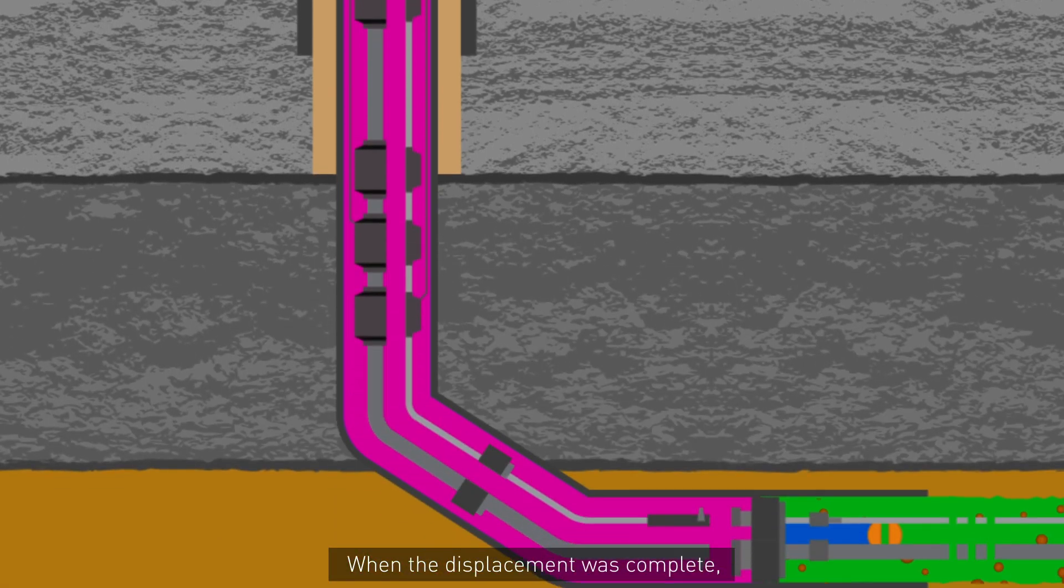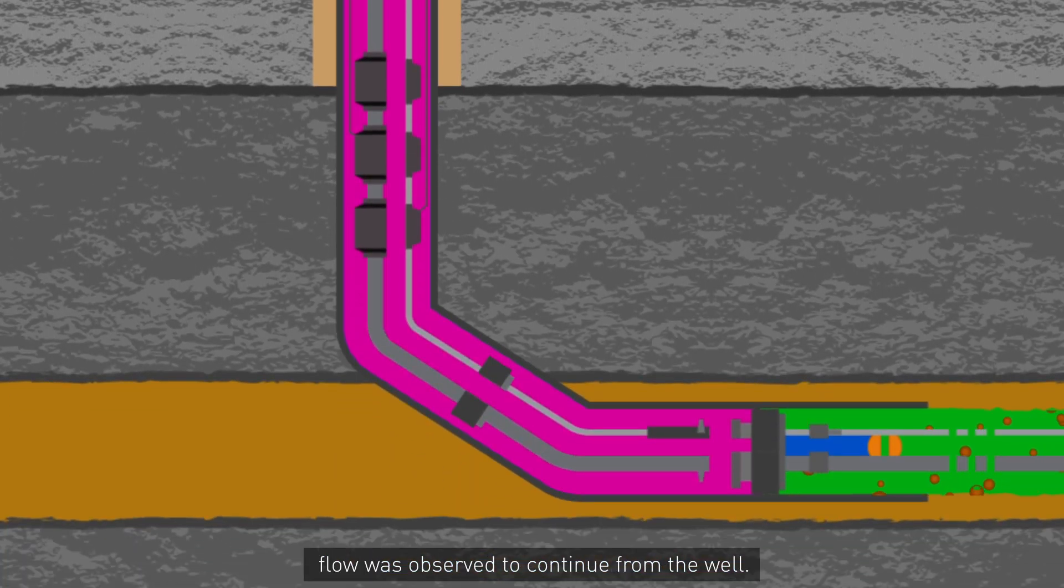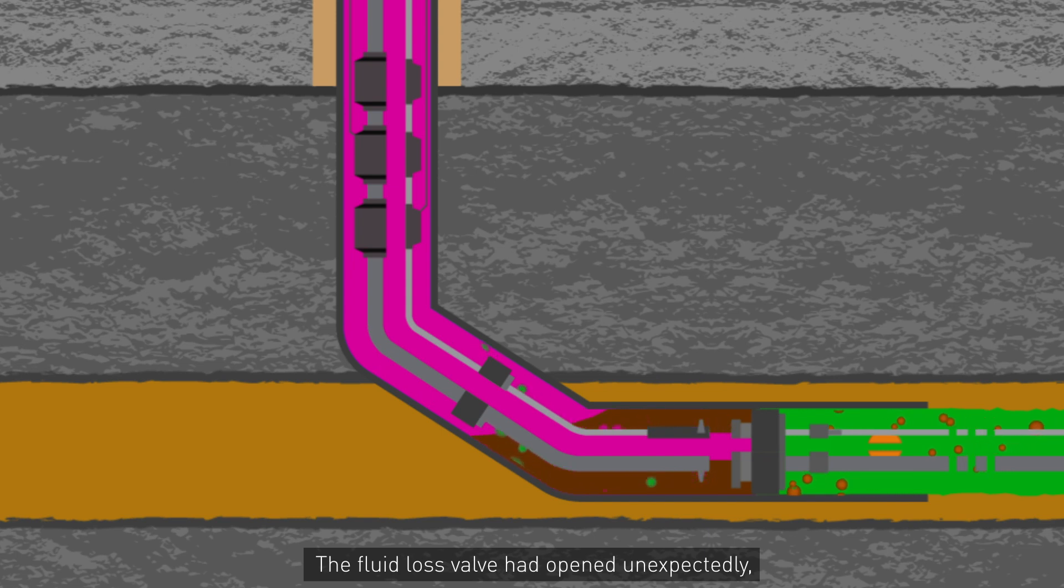When the displacement was complete, flow was observed to continue from the well. The fluid loss valve had opened unexpectedly, allowing reservoir fluids to enter the well bore.